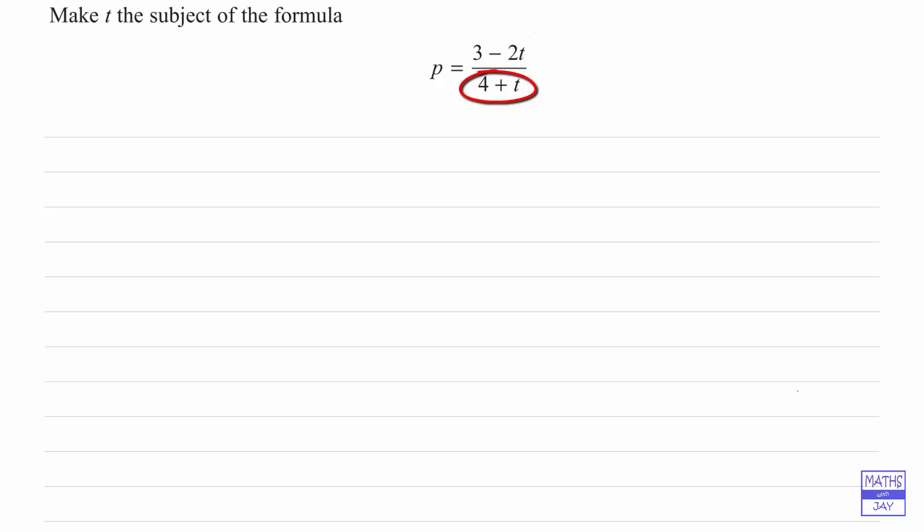We're going to multiply both sides by 4 plus t. So we've got 4 plus t times p on the left hand side and 3 minus 2t on the right hand side. Now we need to expand the bracket, so we're going to multiply out the left hand side. That will give us 4p plus t times p, or pt.